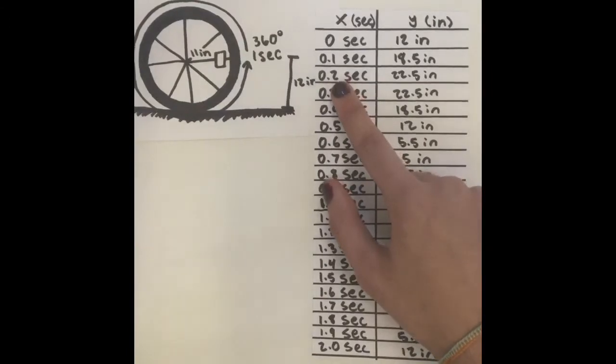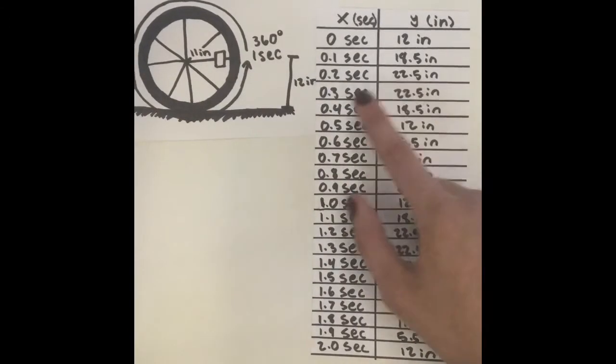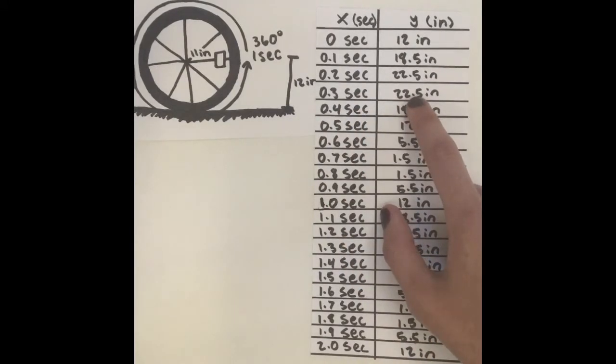At 0.2 seconds, the reflector is at 22.5 inches. At 0.3 seconds, it's also at 22.5 inches, meaning it has reached the top of the wheel and then started to come back down.